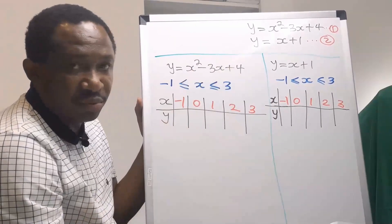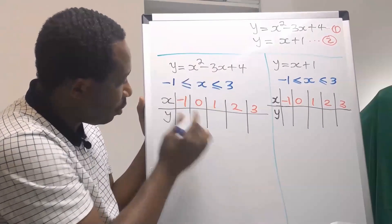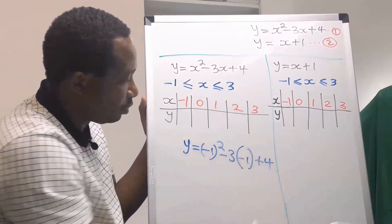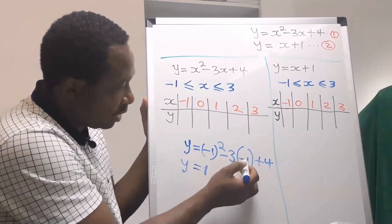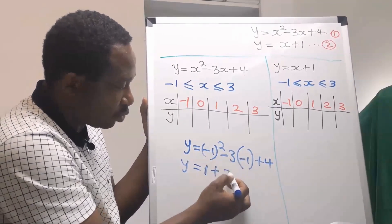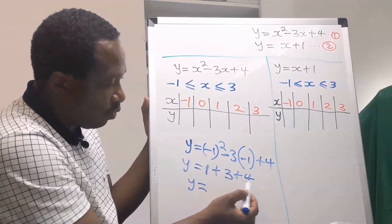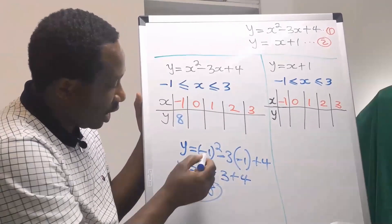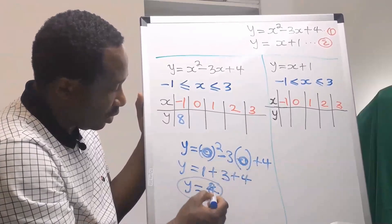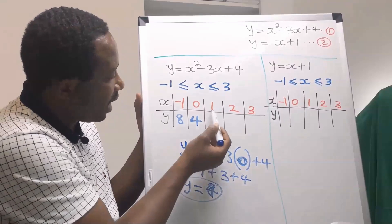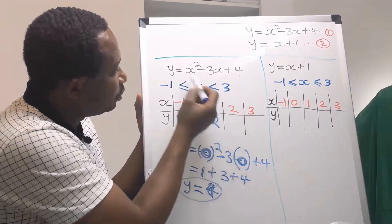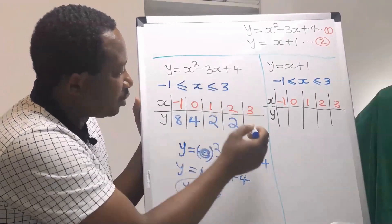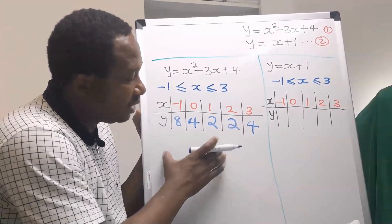Let's consider the first table. For x equals minus 1, y equals minus 1 squared minus 3 times minus 1 plus 4. Minus 1 squared is 1, minus times minus is plus, so 3 times 1 is 3, plus 4 gives us 1 plus 3 is 4, and 4 plus 4 is 8. For x equals 0, y is 4. For x equals 1, y is 2. For x equals 2, y is 2. For x equals 3, y is 4. We are done with Table 1.